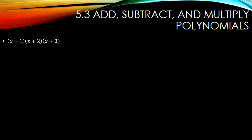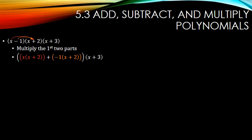For these, when you multiply three things, you multiply the first two and then take that result and multiply it with the third one. So I'm going to multiply the first two parts: x times (x plus 2), and negative 1 times (x plus 2). Distribute each of those — so I have x-squared and 2x, then negative x and negative 2. Combine like terms: 2x and negative x gives us just x.